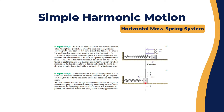As the mass returns to the equilibrium position at x equals zero, it achieves maximum velocity, moving towards the left or negative direction. The restoring force acting on it is zero because displacement is zero. The mass keeps moving through equilibrium and begins to compress the spring. As it compresses, the restoring force acts to the right to return it to equilibrium, causing the back-and-forth oscillation we call harmonic motion.